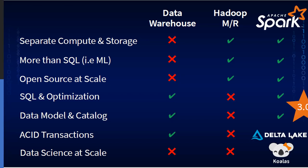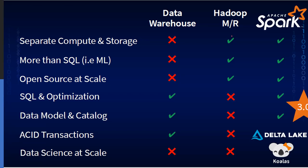Before we get into the world of Hadoop MapReduce — which broke through a lot of ways data was computed earlier — we did have data warehouses as massive data archival systems. Data warehouses had a lot of shortcomings that Hadoop was meant to fulfill. But there were a couple of good things with data warehouses: SQL and optimization, which made transactions more ACID-compliant.